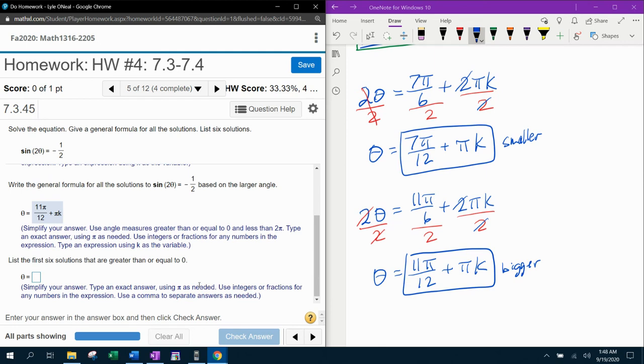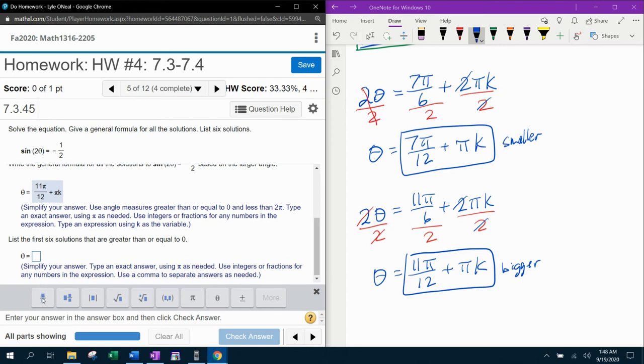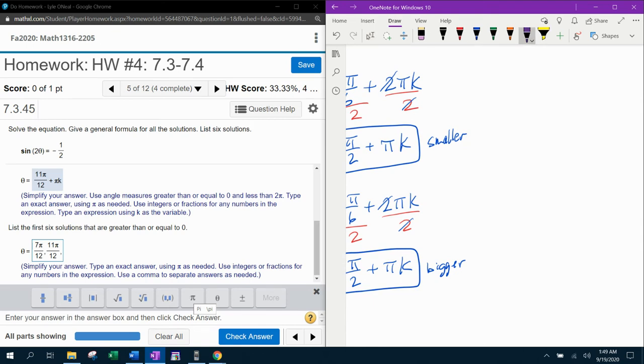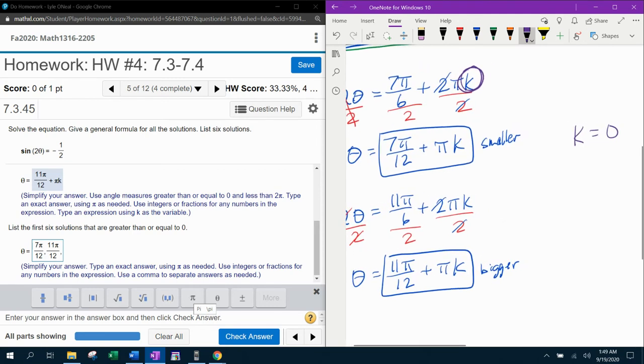And now it wants me to list six solutions. So obviously, the very first solution would be our 7 pi over 12. Don't forget your commas. And then the next angle, the next biggest angle would be 11 pi over 12. And if you're going, what did you just do? Here's what I did. Remember, we said that k is an integer, right? So I started off with zero. What if k is zero? If k is zero, then zero times pi would just be zero, giving us our 7 pi over 12. And then down here, if k is zero, that would disappear and become 11 pi over 12. So when k is zero, we get our first two angles.